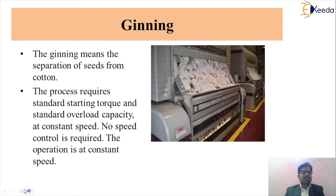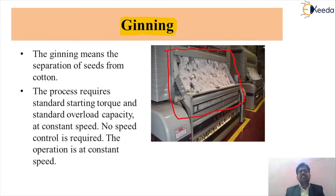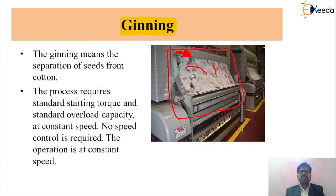The first and very basic process in the textile industry is called ginning. Ginning is a very simple process by which we separate out the seed from the cotton. As we see in the machinery, we insert the raw material obtained from farmers — which contains cotton along with cotton seeds — and we separate out the cotton seed from the cotton to perform further processes.